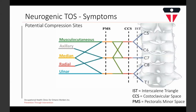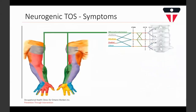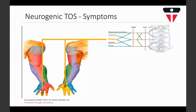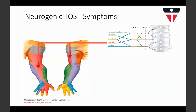The symptoms may follow a specific dermatome depending on which nerve is actually being compressed, including the musculocutaneous, axillary, median, radial, and ulnar nerves. TOS most commonly affects the whole hand, and it depends on exactly where the actual compression is taking place.